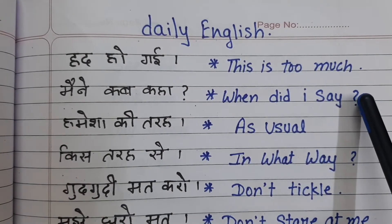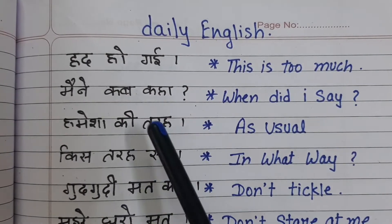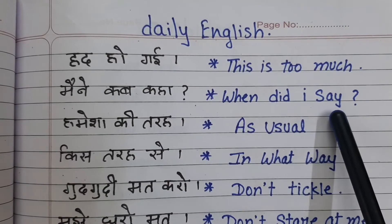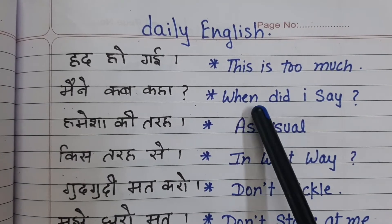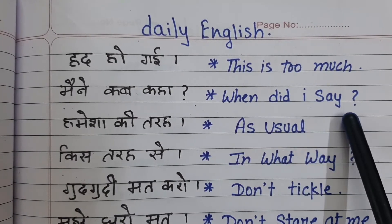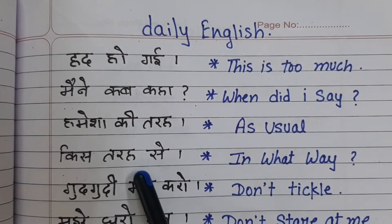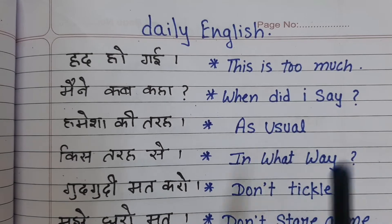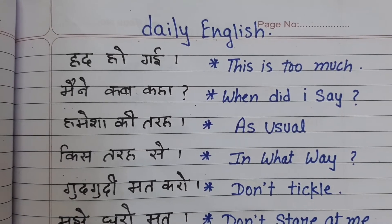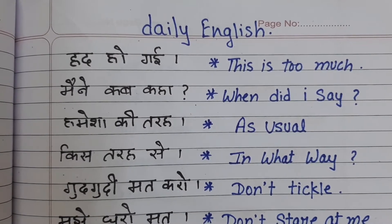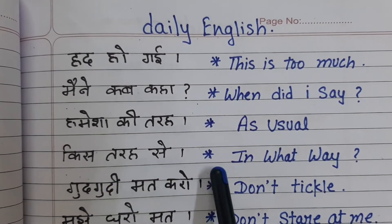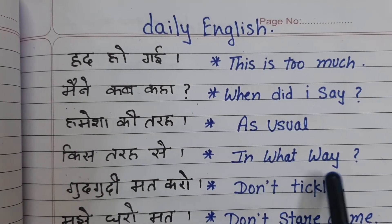मैंने कब कहा — when did I say. हमेशा की तरह — as usual. किसी तरह से — in what way.